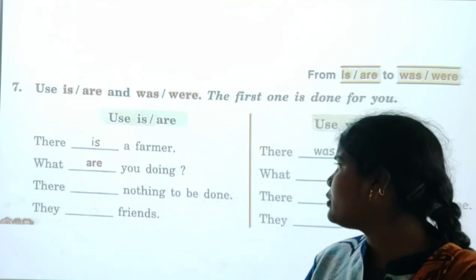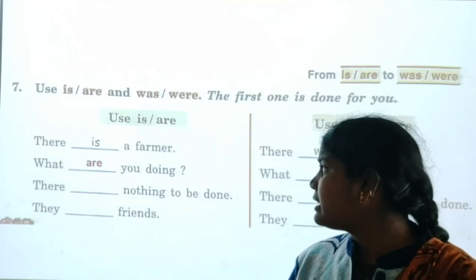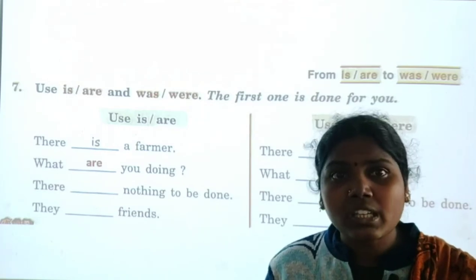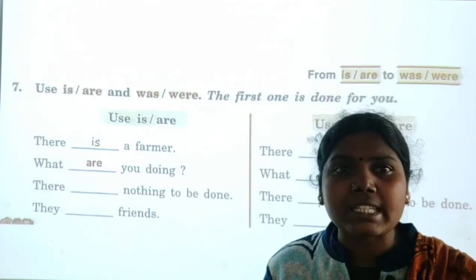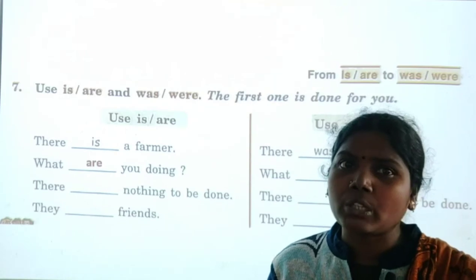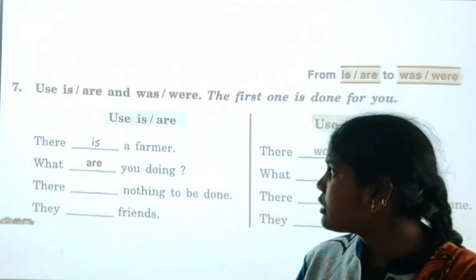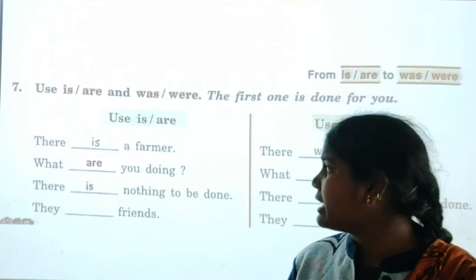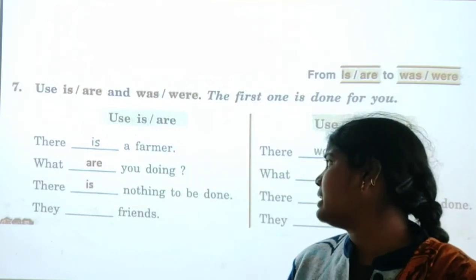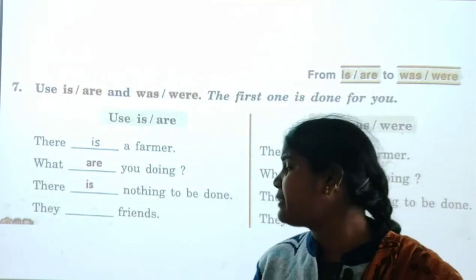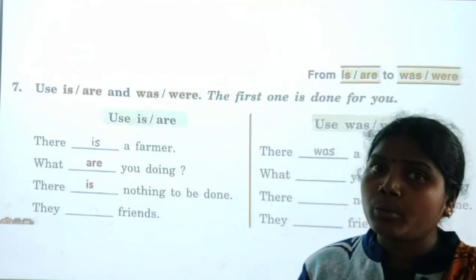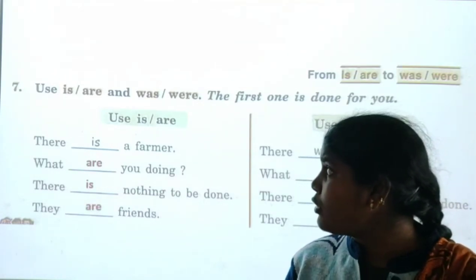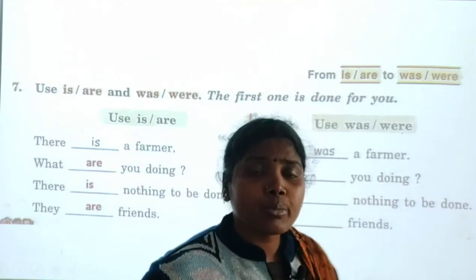'There is nothing to be done.' 'Nothing' falls under third person singular — like he, she, it — so we use 'is.' 'They ___ friends.' 'Friends' is plural, so we write 'are.' Now we have completed the simple present tense section.